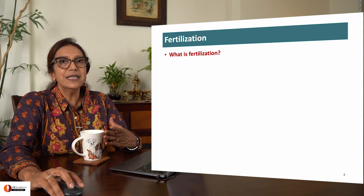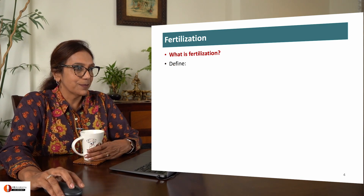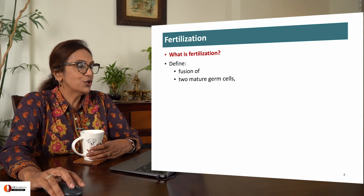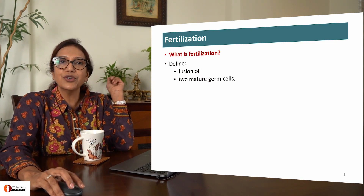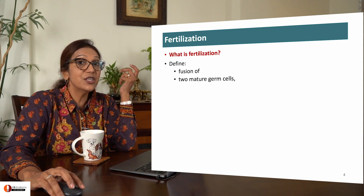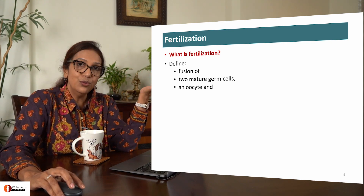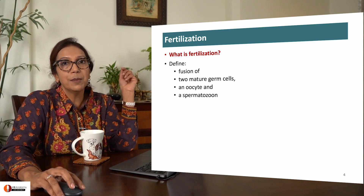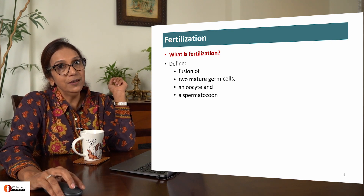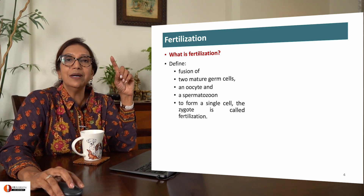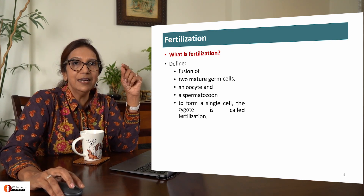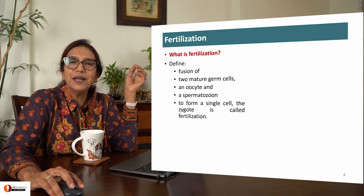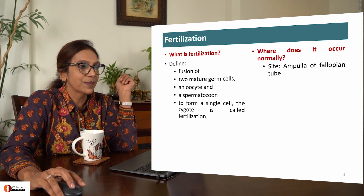So, what is fertilization? Let us try and define it. It is a fusion of two mature germ cells — a oocyte from the mother and a spermatozoon from the father — to form a single cell, the zygote. It is a very simple definition of fertilization.